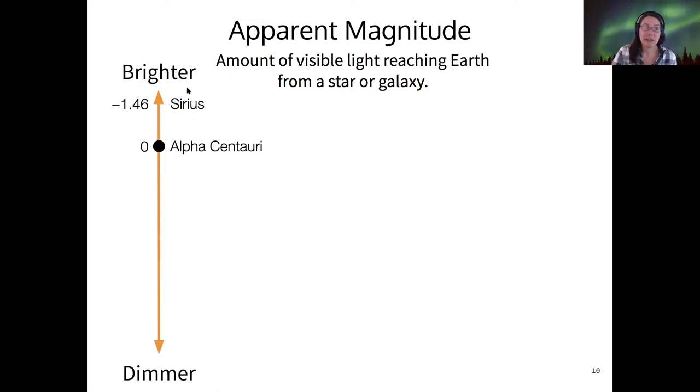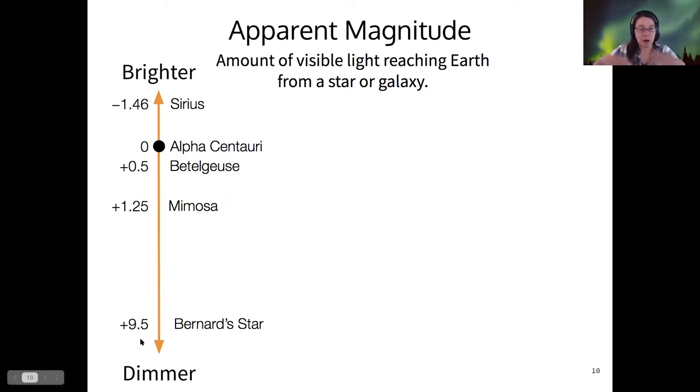And brighter stars have negative magnitudes. So for example, Sirius is one of the brightest stars in our sky, has a magnitude of minus 1.46. And then dimmer stars have positive magnitudes. So Betelgeuse is the right shoulder of the constellation Orion. It's a red star. Mimosa, I don't actually know where that star is, but cool name. And then Bernard's star is a fairly dim star, famous for having the biggest proper motion of any star, and it's fairly dim with an apparent magnitude of plus 9.5. So as we go more and more negative, those are more and more bright stars. And then more and more positive, that's more and more dim.